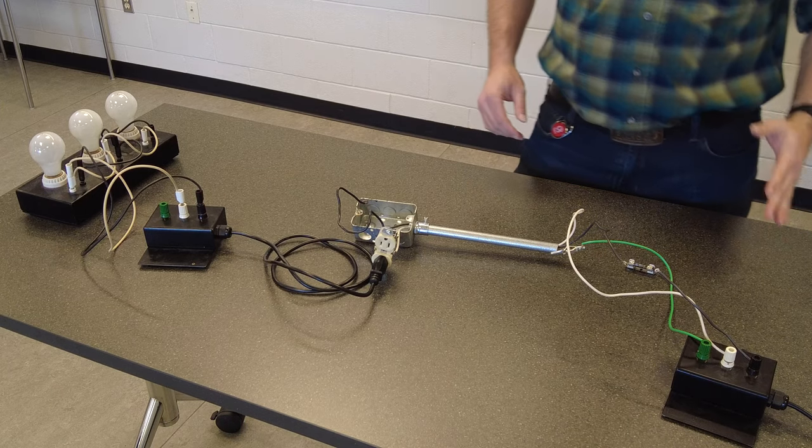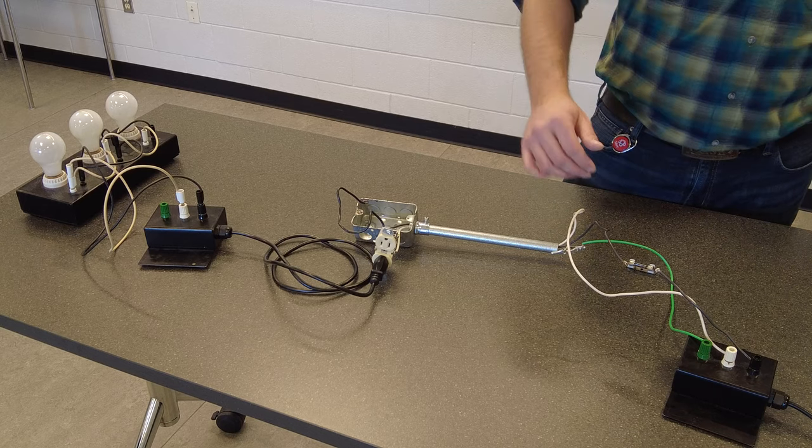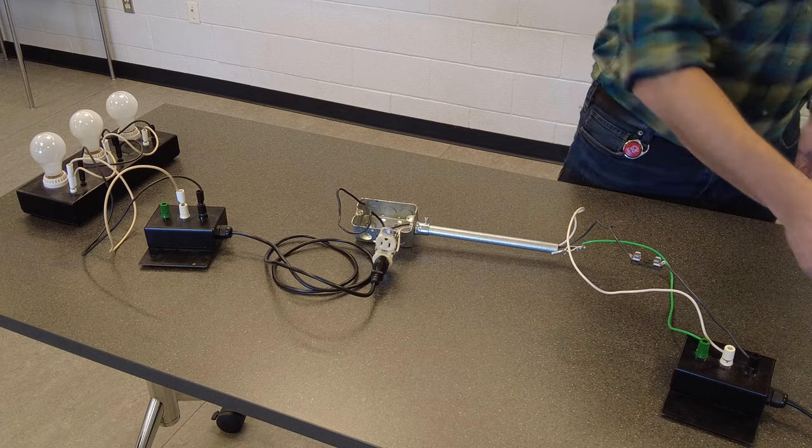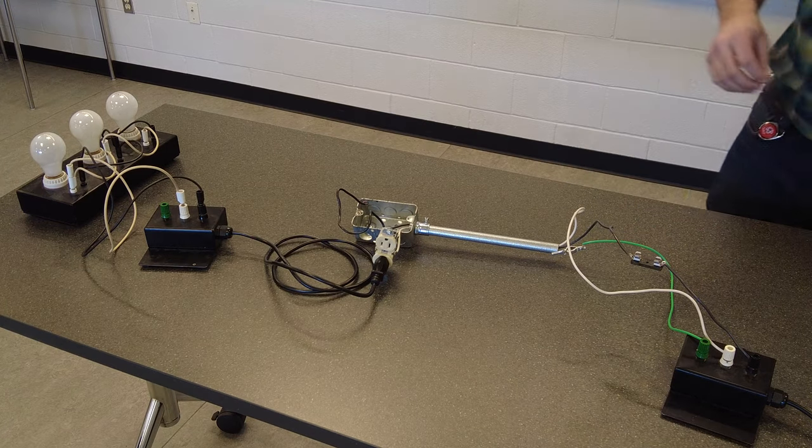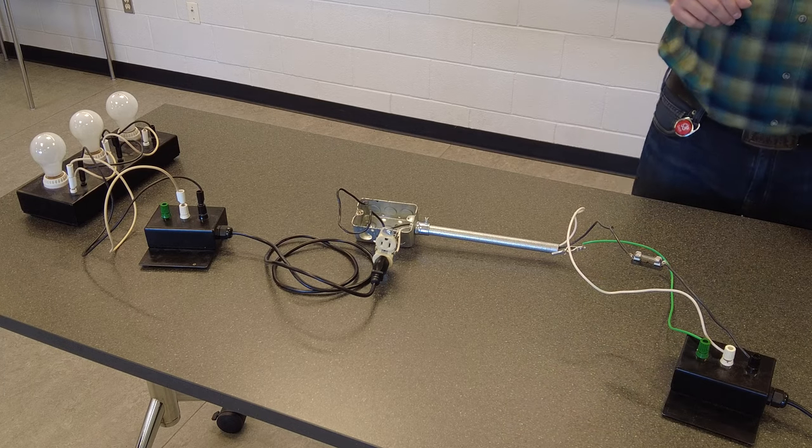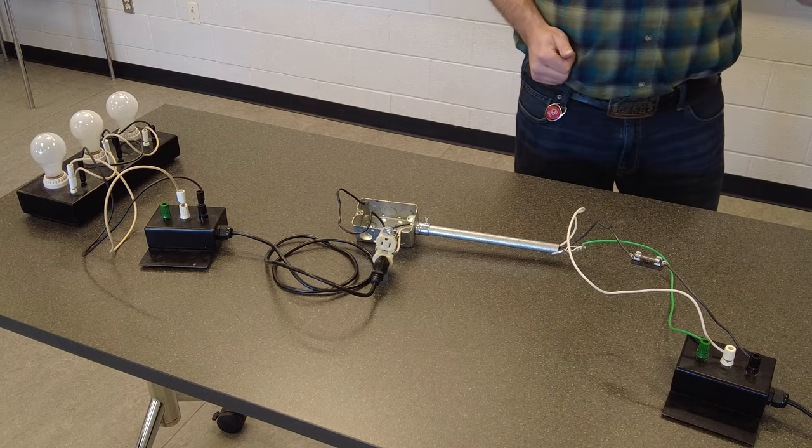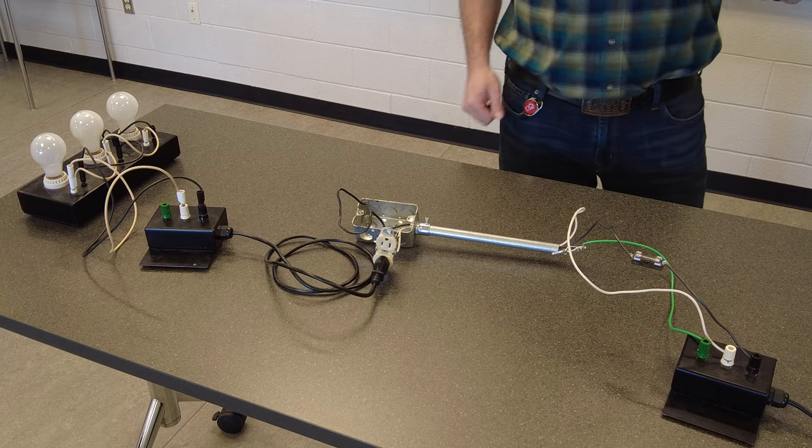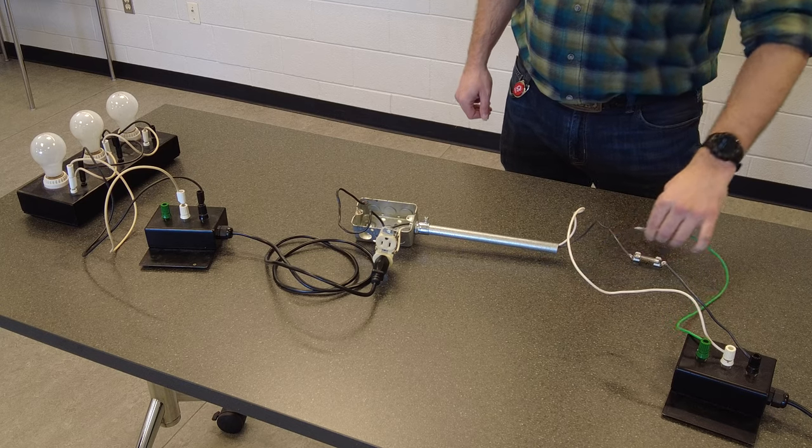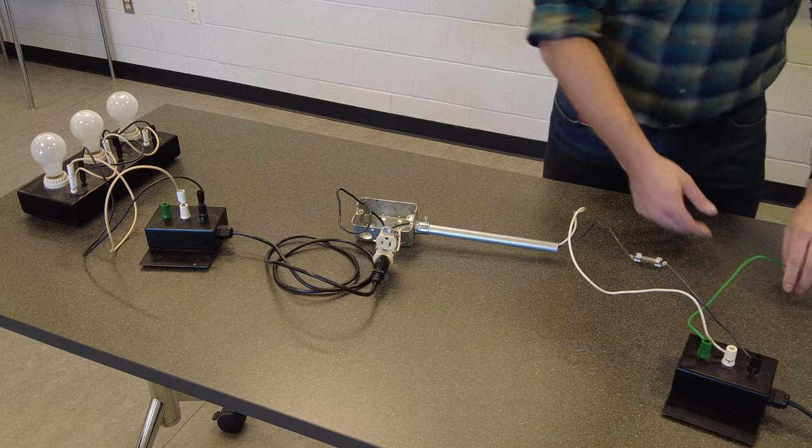So in the next example, what we're going to do - I've de-energized everything. Always make sure everything is de-energized whenever you're removing live components, but we're going to replace this 5 amp fuse with another 5 amp fuse. And we're going to see exactly what happens again. So we're going to re-energize this, but I'm going to make one critical difference in this system. I'm going to disconnect this bonding conductor, that one little green conductor that seems like it doesn't do much.